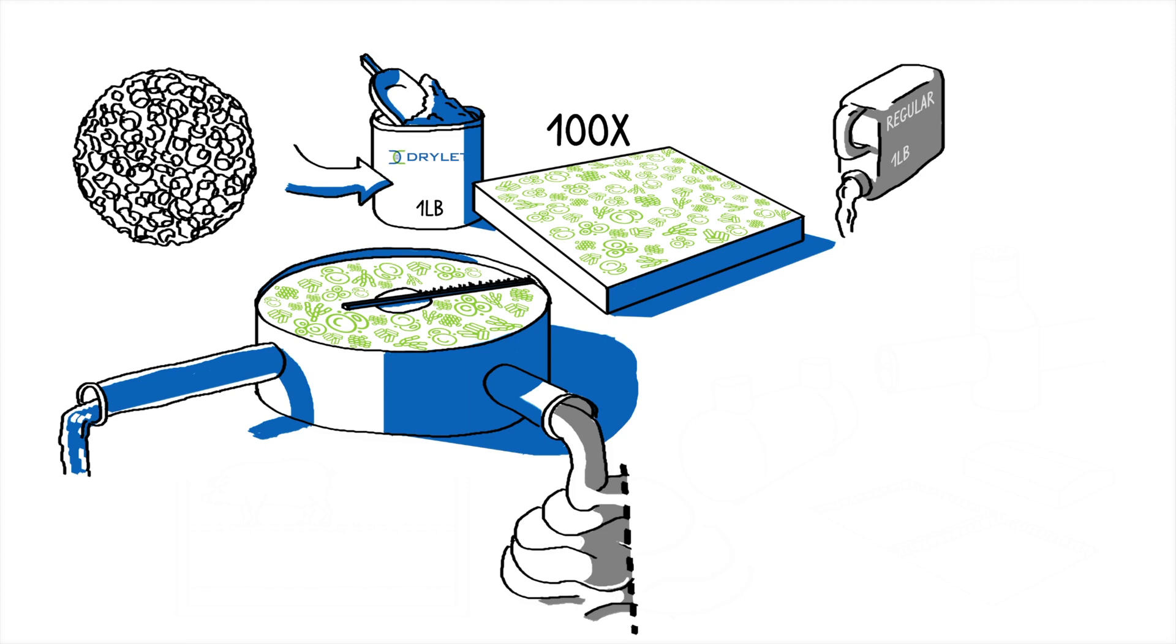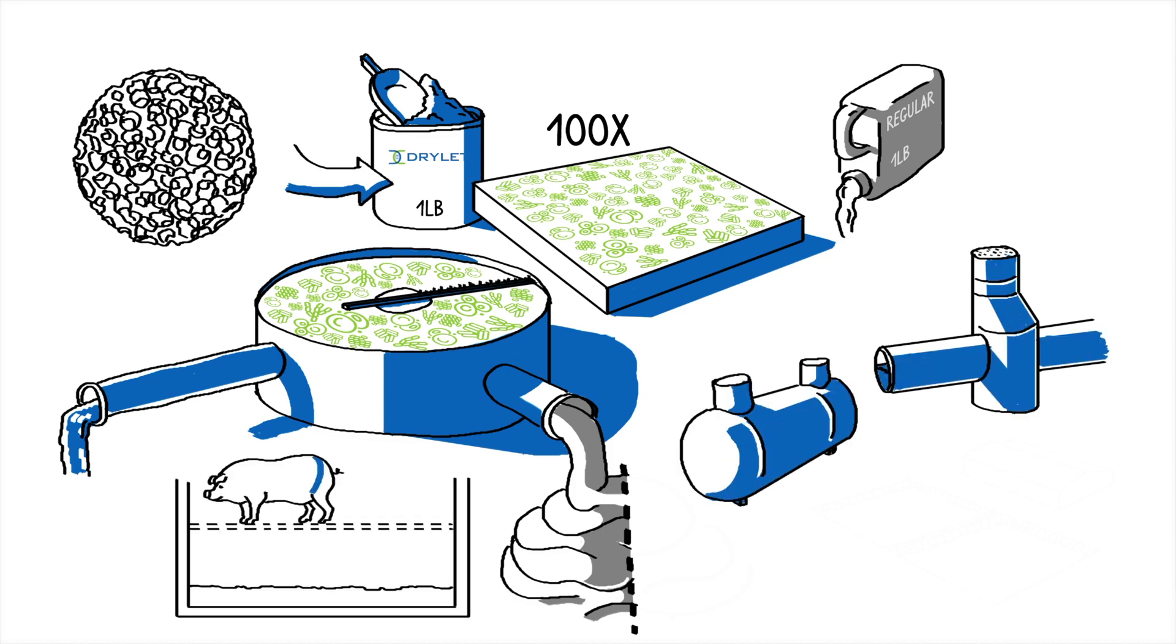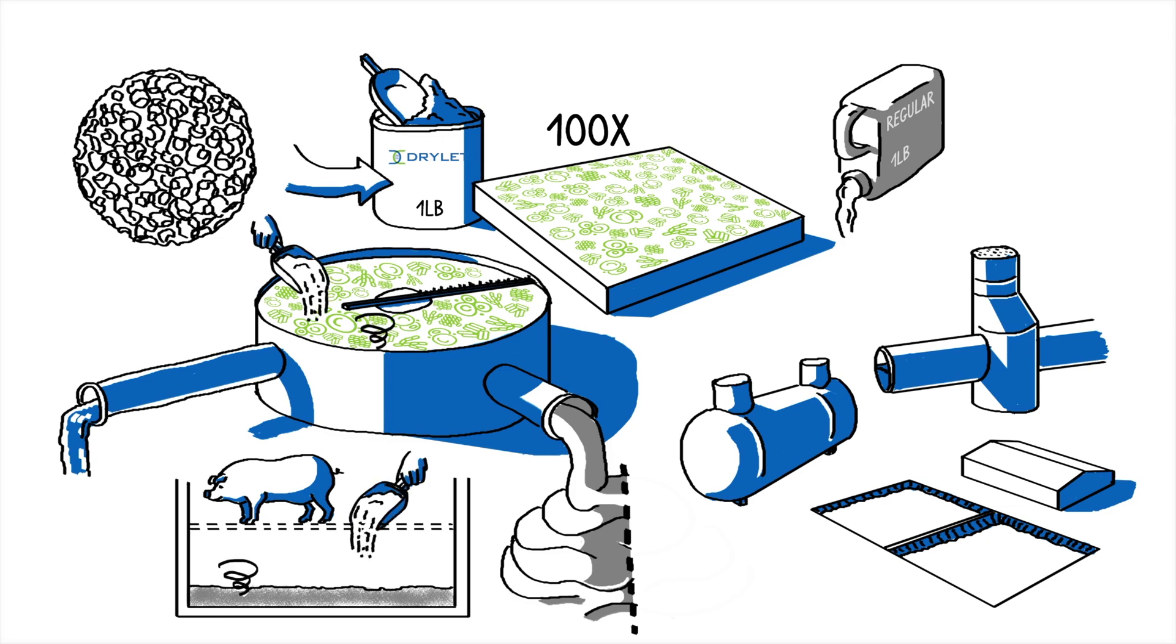Drylite's customers are experiencing this at wastewater treatment plants, in collection systems, in septic tanks, in hog barns, in manure lagoons. Any place where biology is at work to process waste, Drylite can boost it and dramatically enhance its efficiency.